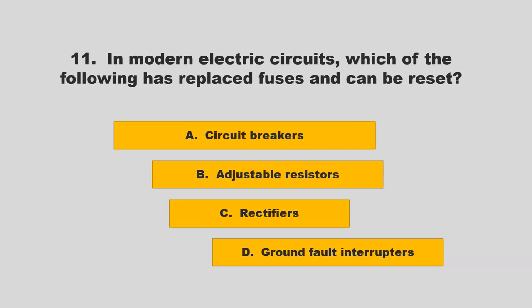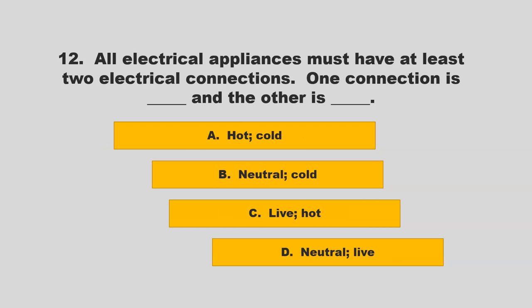In modern electric circuits, which of the following has replaced fuses and can be reset? Is it circuit breakers, adjustable resistors, rectifiers, or ground fault interrupters? If you chose A, circuit breakers, you are correct.